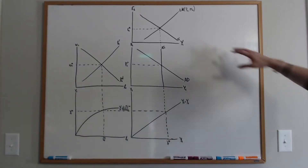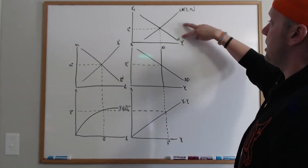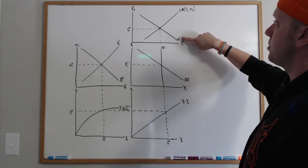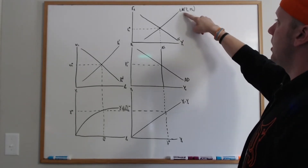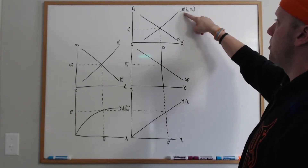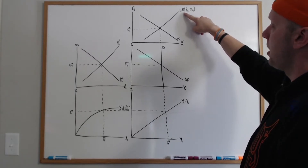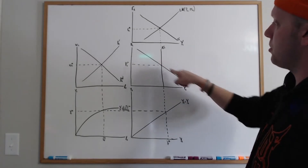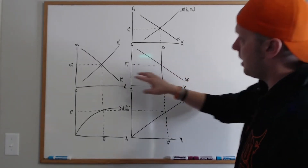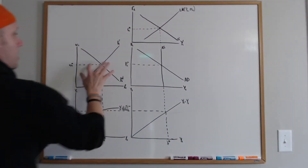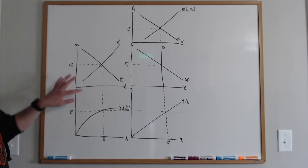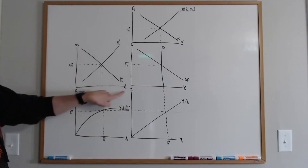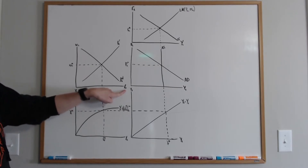Here we have the IS and LM curves. Remember, the IS curve reflects all interest rate-output combinations where goods markets clear; the LM curve represents all interest rate-output combinations where money markets clear. These two determine the aggregate demand curve, and we have a downward-sloping aggregate demand curve. Over here we have labor demand and labor supply — the labor market — with the real wage rate on the vertical axis and the amount of labor on the horizontal axis.